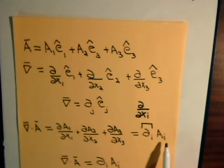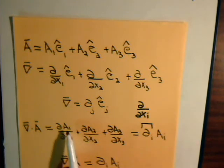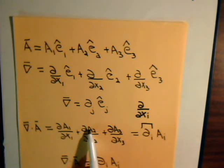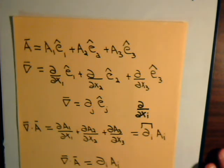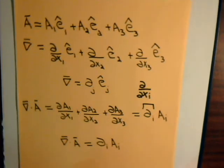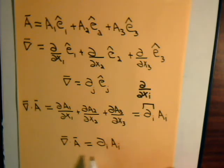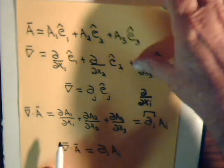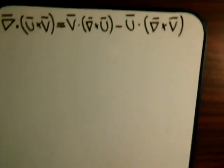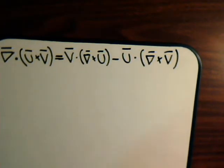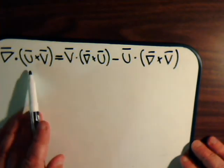Here we have a double index, so we sum over that index to give us 1, 2, and 3. So in component form, the divergence of a vector can be expressed as partial i A i.